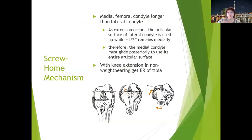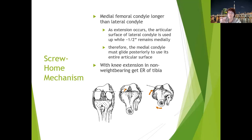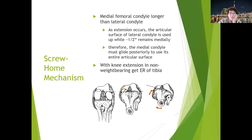The screw-home mechanism occurs because the medial femoral condyle is about half an inch longer than the lateral femoral condyle. As the knee goes into extension, the lateral femoral condyle is fully articulated first, but the medial femoral condyle has to glide posteriorly to use its entire articular surface. In non-weight-bearing knee extension, the tibia rotates externally; with full extension in weight bearing, the femur rotates internally on the tibia.